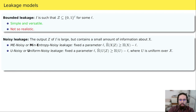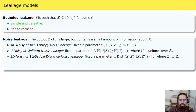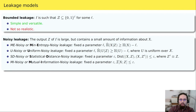A slightly weaker model replaces the random variable x, which may not be uniform, with the uniform distribution u. We refer to this as uniform noisy leakage. Another variant considers the statistical distance between the pair (x, z) and the pair (x, z'), where z' is distributed like z but independent of x; we ask this statistical distance to be bounded by some leakage parameter, calling this statistical distance noisy leakage. Finally, mutual information noisy leakage requires the mutual information between x and its leakage z to be bounded. In our paper we mainly consider these four models as they are the most commonly used.